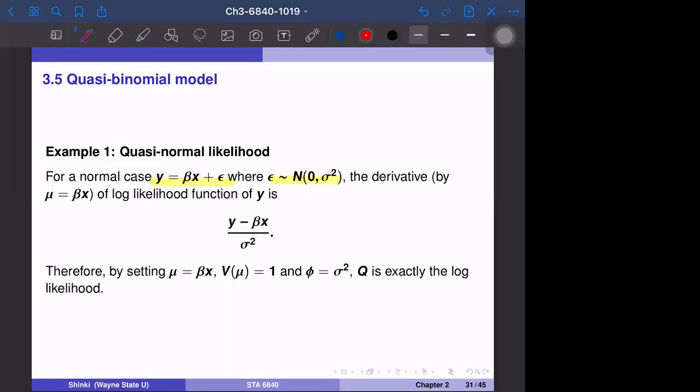What is the distribution of epsilon? Epsilon equals y minus beta x. So f of epsilon is one over square root of two pi sigma, expectation of negative of y minus beta x square divided by two sigma square.